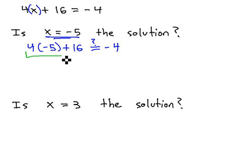Order of operations has us multiply 4 times negative 5 to get negative 20 plus 16, and what we want to know is if that equals negative 4. Well, sure enough, when we add those together, we get negative 4 equals negative 4. The equation works out to a true statement. We would say yes.